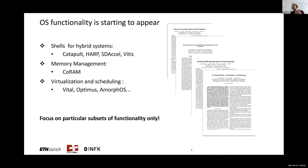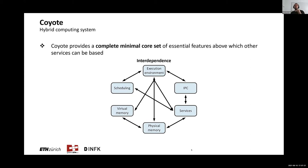Most of this work focuses on particular subsets of functionality and tries to optimize those alone. However, what makes OS abstractions so difficult to implement is actually the interaction between all of these functionalities. For instance, virtual memory depends on physical memory management, which might depend on physical network management. If you have scheduling, you need to account for all stateful services. Rather than looking at isolated abstractions, Coyote tries to examine a more general purpose approach, providing a complete minimal core set of essential features above which other services can be built — similar to a microkernel in the OS domain.